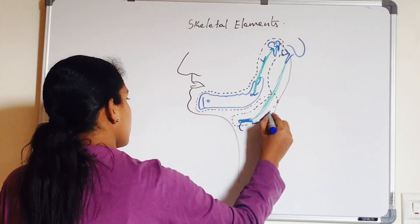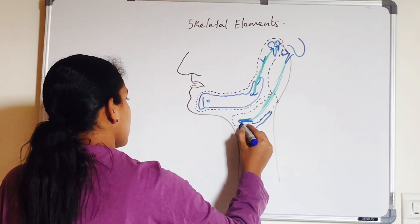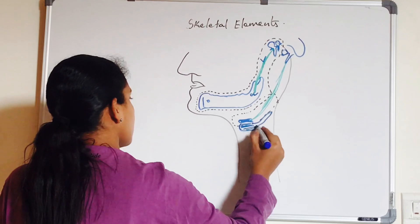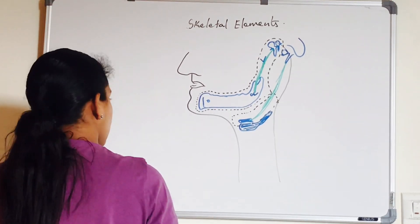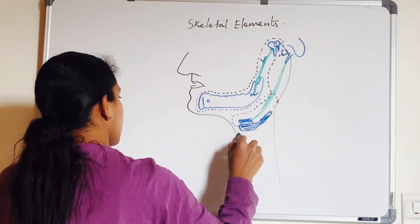Moving on to the third arch, the dorsal part of this arch disappears. Only the ventral part ossifies to form greater cornu and lower part of the body of hyoid bone.